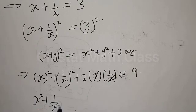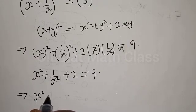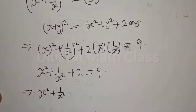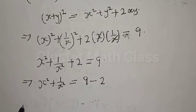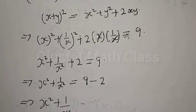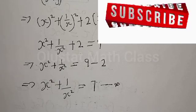The 2xy term simplifies: 2 times x times 1 over x equals 2. So we have x squared plus 1 over x squared plus 2 equals 9, which implies x squared plus 1 over x squared equals 9 minus 2 equals 7. Let's call this equation star.